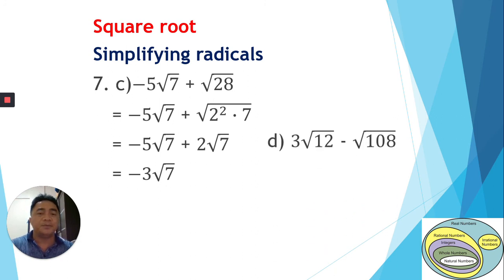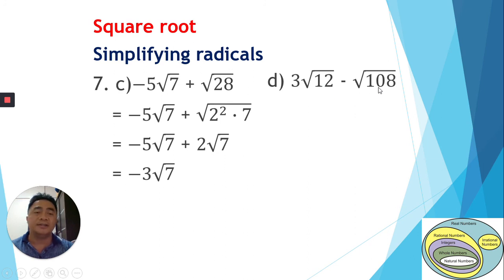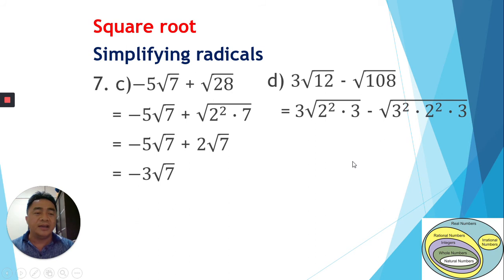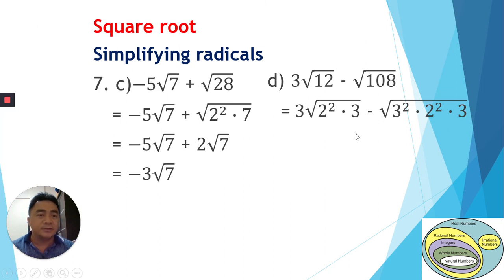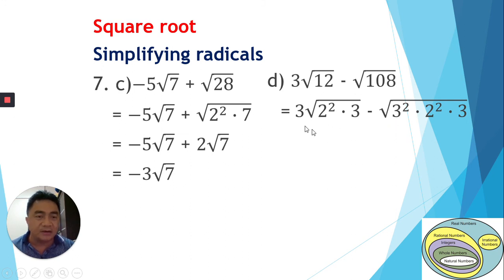For letter D, we have 3√12 minus √108. For 12, we can write it as 3 times 4. For 108, we have 27 times 4, where 27 is 3² times 3 — so 108 equals 3² times 3 times 2², which is 9 times 3 times 4. We extract the perfect squares: from 3√12 we extract 2, leaving √3; from √108 we extract 3 and 2, leaving √3.